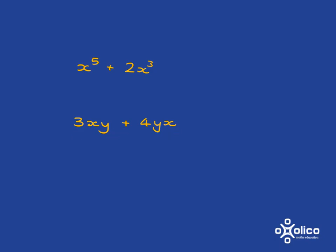3xy plus 4yx. At first glance, xy and yx don't appear to be the same thing, but when you multiply it doesn't matter the order. 10 times 2 is the same as 2 times 10, so x times y is the same as y times x. These two are like terms because this is just 4xy, so in total you've got 7xy.